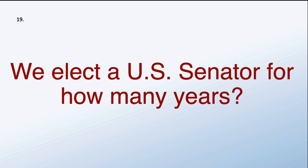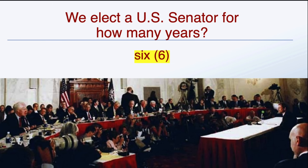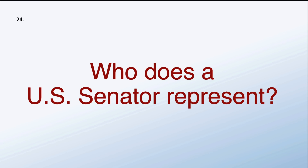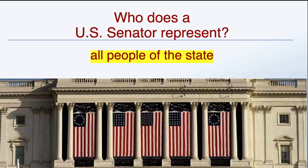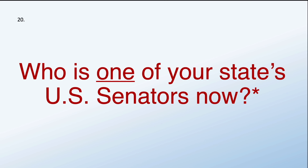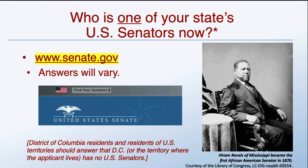We elect a US Senator for how many years? Six years for a Senator. Who does a US Senator represent? All people of the state. Who is one of your state's US Senators now? Answers will vary — you'll need to go to Senate.gov and click on your state to find your Senators, or leave a comment below.